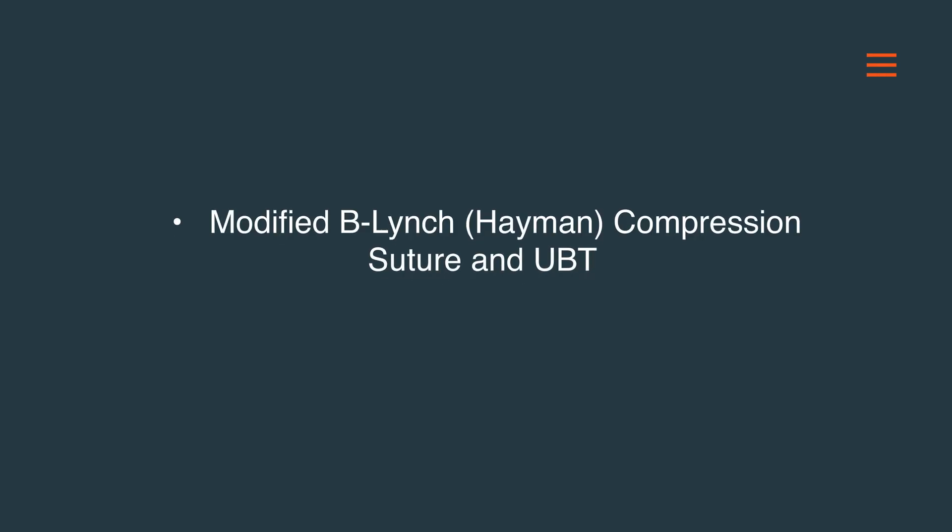Uterine balloon tamponade is not a definitive treatment for the underlying cause of bleeding, and further management or interventions may be required. In summary, this video has discussed postpartum haemorrhage prevention in caesarean section and two simple surgical interventions to control obstetric haemorrhage: modified B-Lynch or Hayman compression sutures, and uterine balloon tamponade insertion. Thank you for watching.